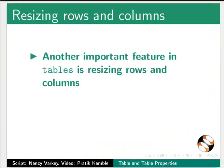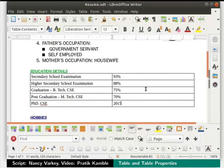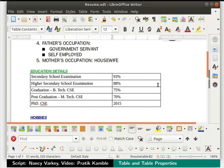Another important feature in tables is resizing rows and columns. We can adjust the height and width of rows and columns in a table in several ways. We can increase the column width manually by dragging the border with the cursor. Likewise we can decrease the width as well. We can do the same with row height also.